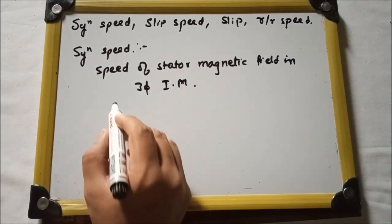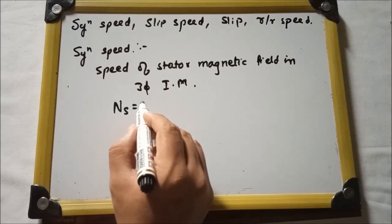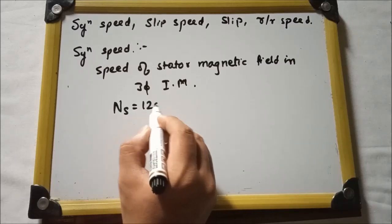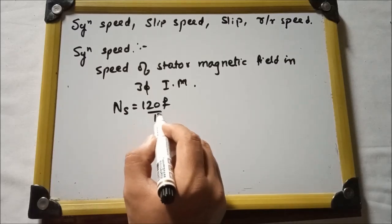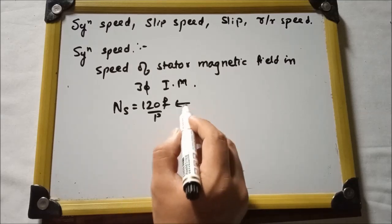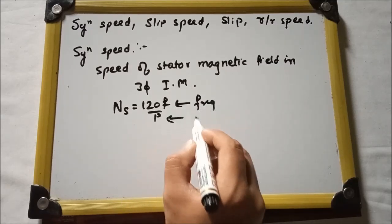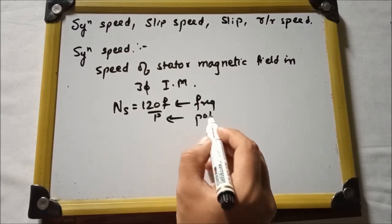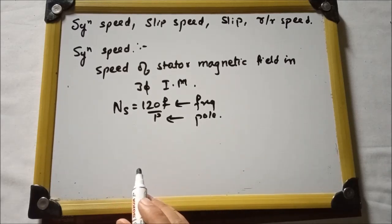Synchronous speed is given as n = 120F / P, where F is frequency and P is the number of poles.